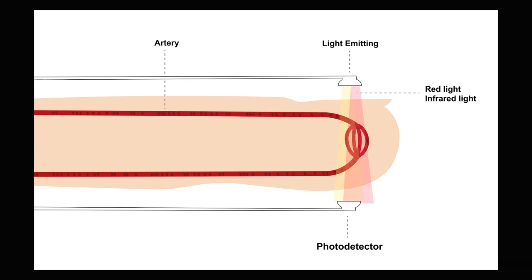Keep in mind that other light in the room can interfere — if the patient has their hand in direct sunlight or there are fluorescent lights on. Those lights can interfere with how well the device reads. If you're having trouble getting a pulse ox reading on someone, a good suggestion is to put their hand under the covers and try to keep it out of direct light. You might get a better reading that way.